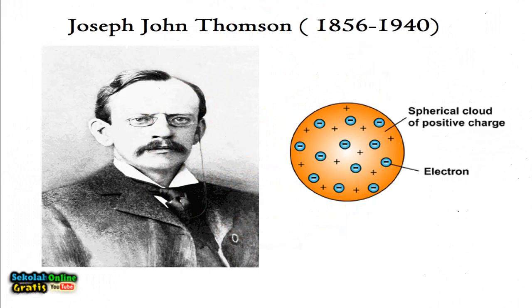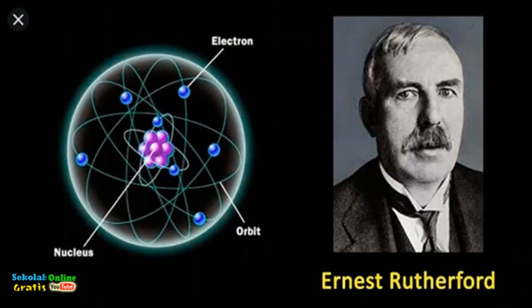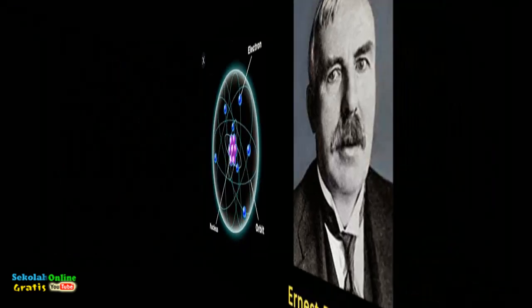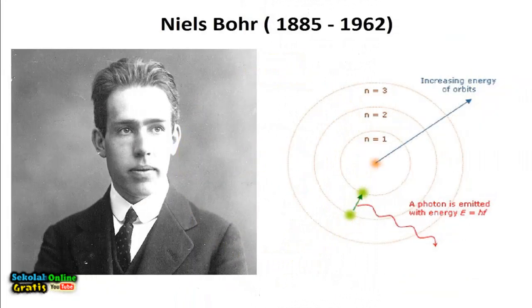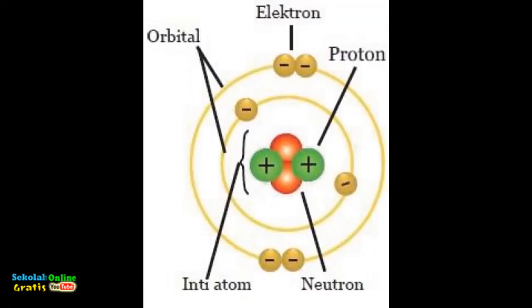Ernest Rutherford said that the atom is a sphere in which there is an atomic nucleus which is the center of positive charge and center of mass while the electrons revolve around the nucleus. Neils Bohr said that the atom consists of a nucleus which is the center of mass of the atom in the center of positive charge while electrons move around the nucleus in certain paths or orbits called atomic shells. As long as electrons surround the nucleus they do not emit energy.